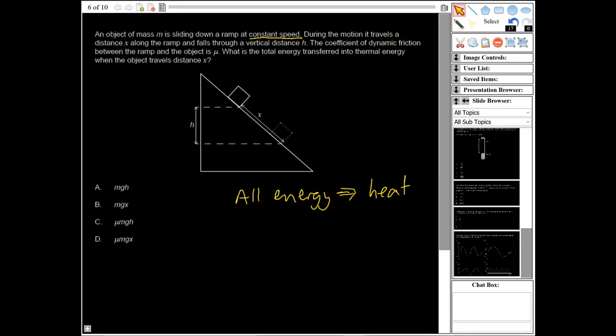Okay, so therefore we would work out the total energy transferred into thermal energy. So it's just going to be the change in the potential energy, so it's just going to be mgh. So that would be A.